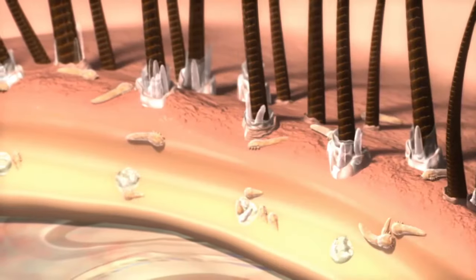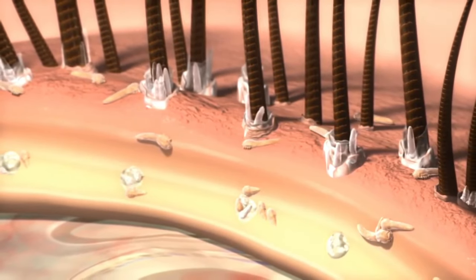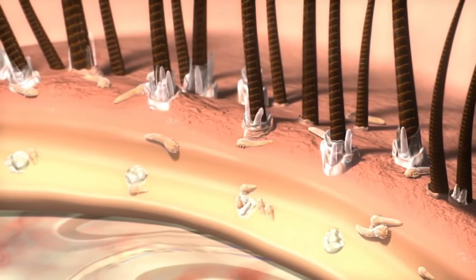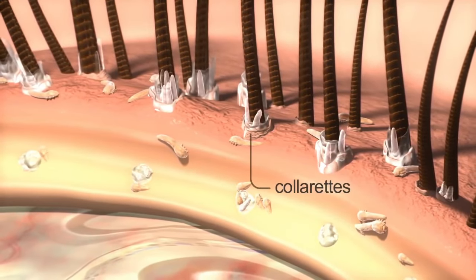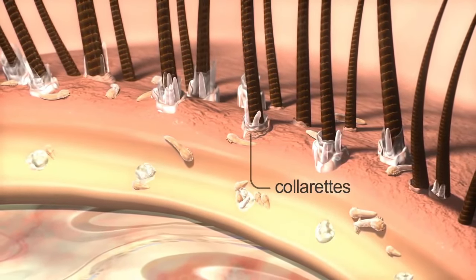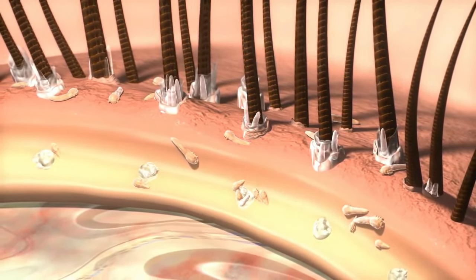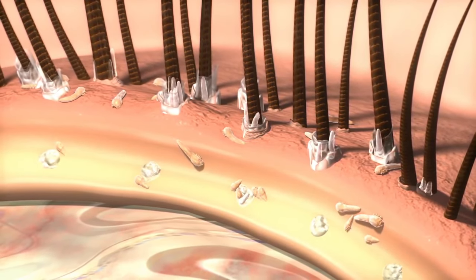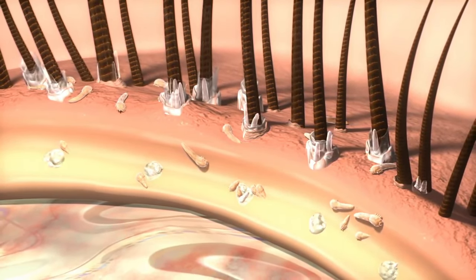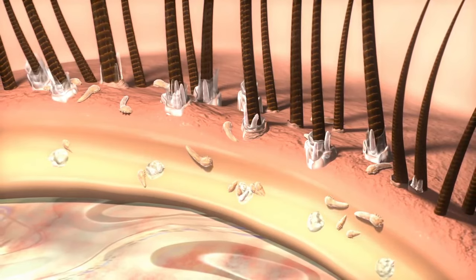As mites proliferate, the partially digested epithelial cells, keratin, mite waste, and eggs combine to form collarettes, which can be seen with a slit lamp. These collarettes are a pathognomonic sign of demodex infestation and are specific for demodex blepharitis.